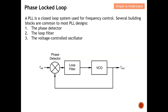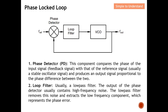A Phase-Locked Loop is a closed loop system mainly used for frequency control. Several building blocks are common to most PLL designs. As shown in the diagram, there are three main components: the first is the phase detector, the next is the loop filter — which is typically a low-pass filter — and last but not least, the VCO, the voltage-controlled oscillator.